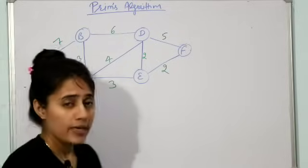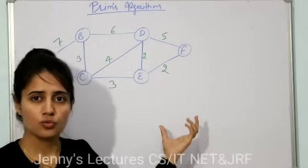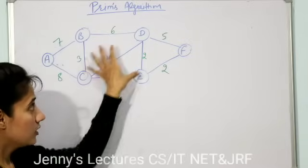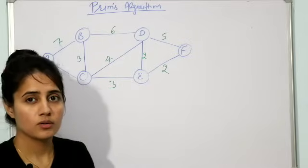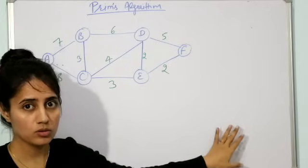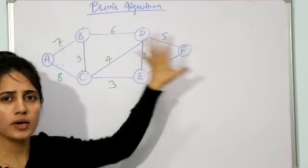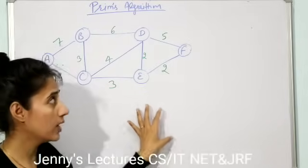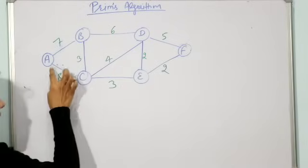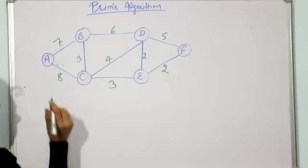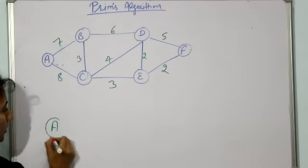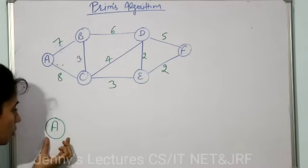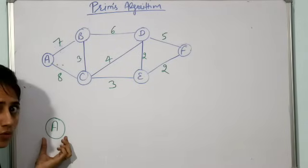Now choose any arbitrary vertex as a root node. In Kruskal's algorithm, you arrange all edges by increasing weight, but in Prim's algorithm you simply choose any arbitrary node as a root node. Suppose we are choosing vertex A — we are going to start drawing the MST from A.